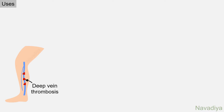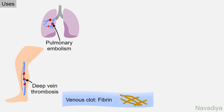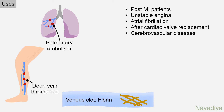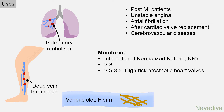Regarding uses, warfarin is used in deep vein thrombosis and pulmonary embolism — as venous thrombi are rich in fibrin, anticoagulants are preferred. It is also used in post-MI patients, unstable angina, atrial fibrillation, after cardiac valve replacement, and in cerebrovascular diseases. Monitoring of warfarin therapy is done by the international normalized ratio (INR), which should ideally be maintained at 2 to 3, or 2.5 to 3.5 in patients with high-risk prosthetic heart valves.